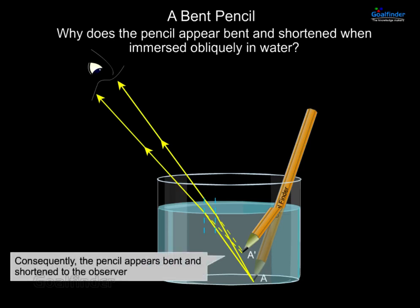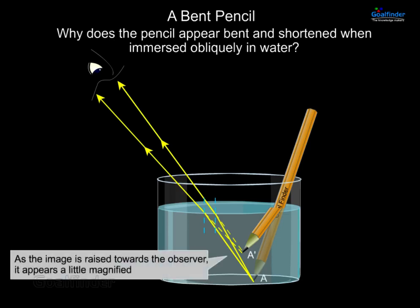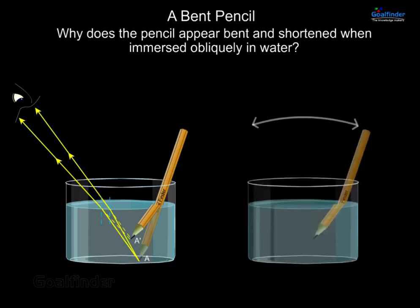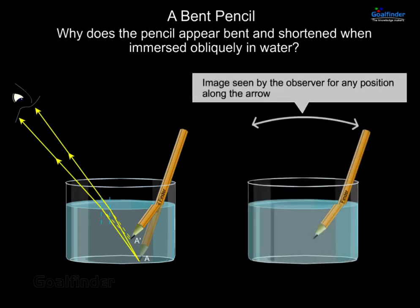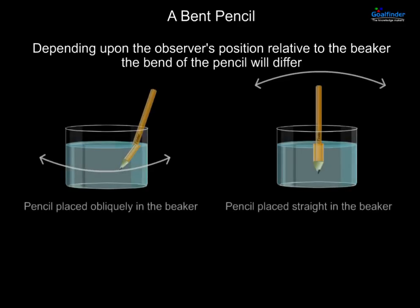Consequently, the pencil appears bent and shortened to the observer. As the image is raised towards the observer, it appears a little magnified. This is the image seen by the observer for any position along the arrow. Depending upon the observer's position relative to the beaker, the bend of the pencil will differ.